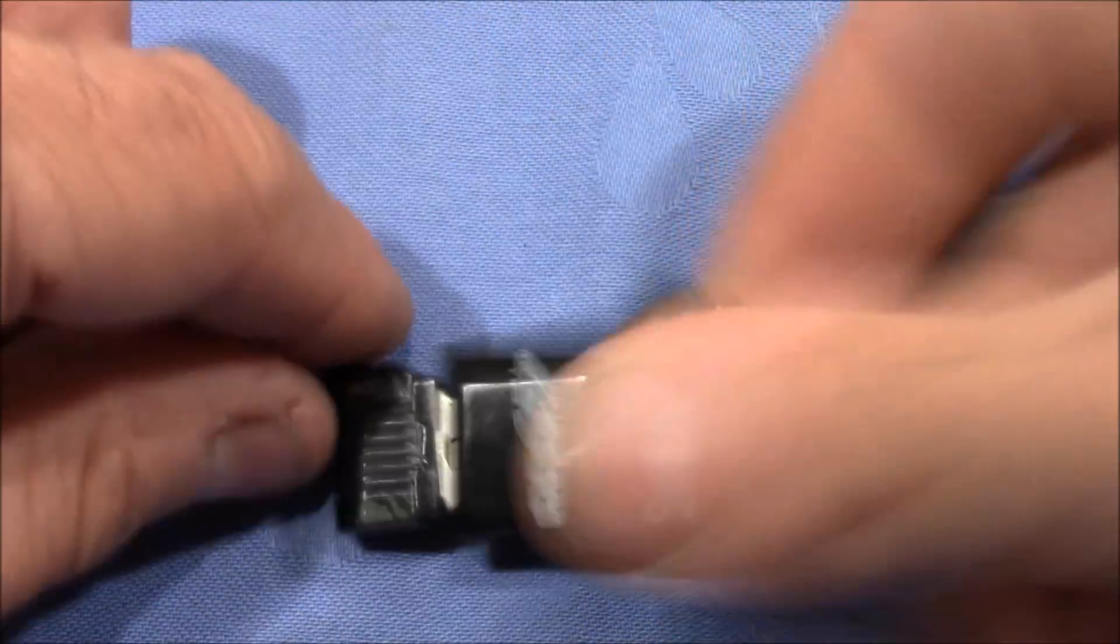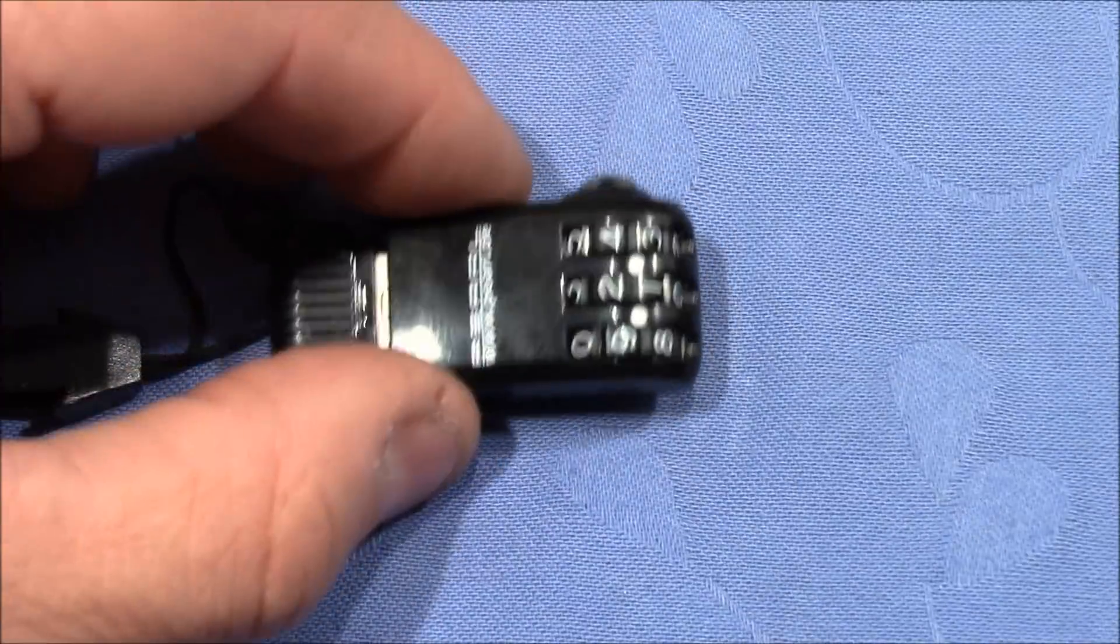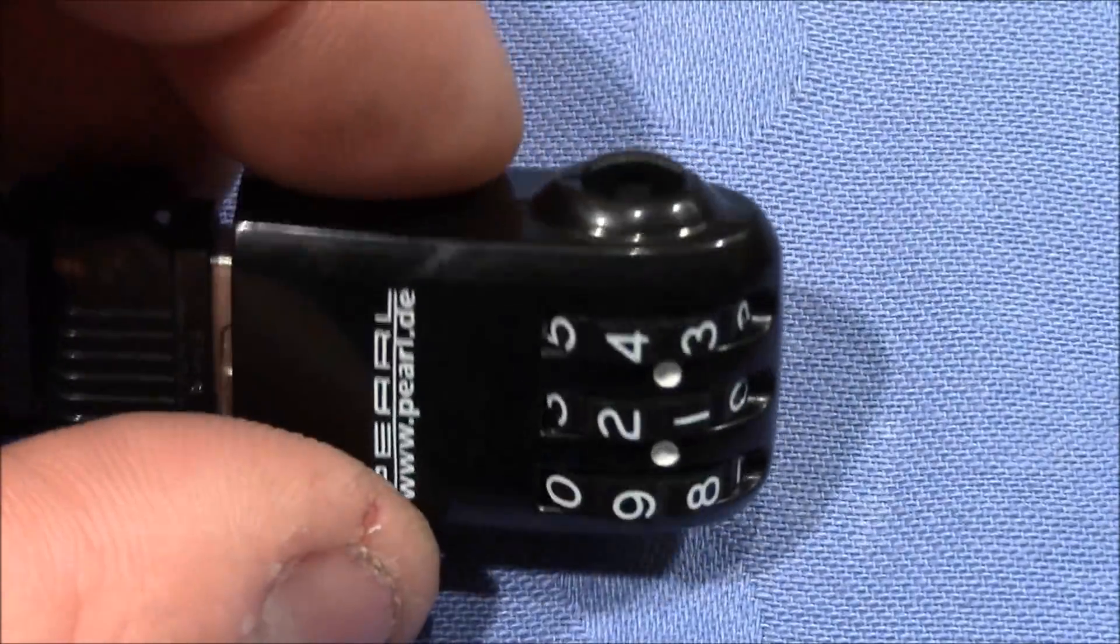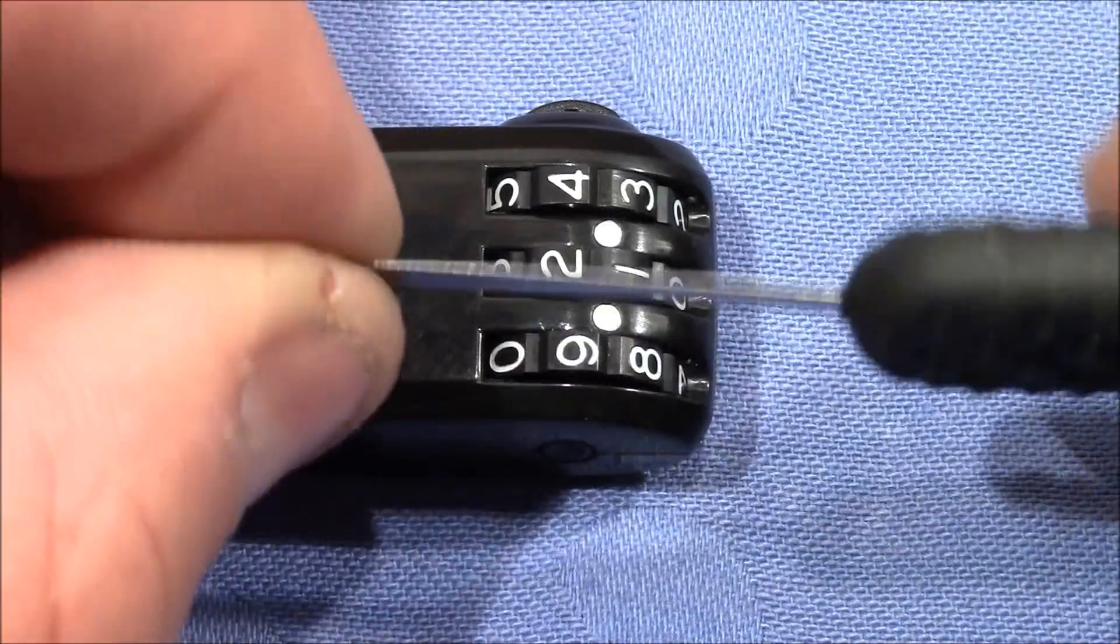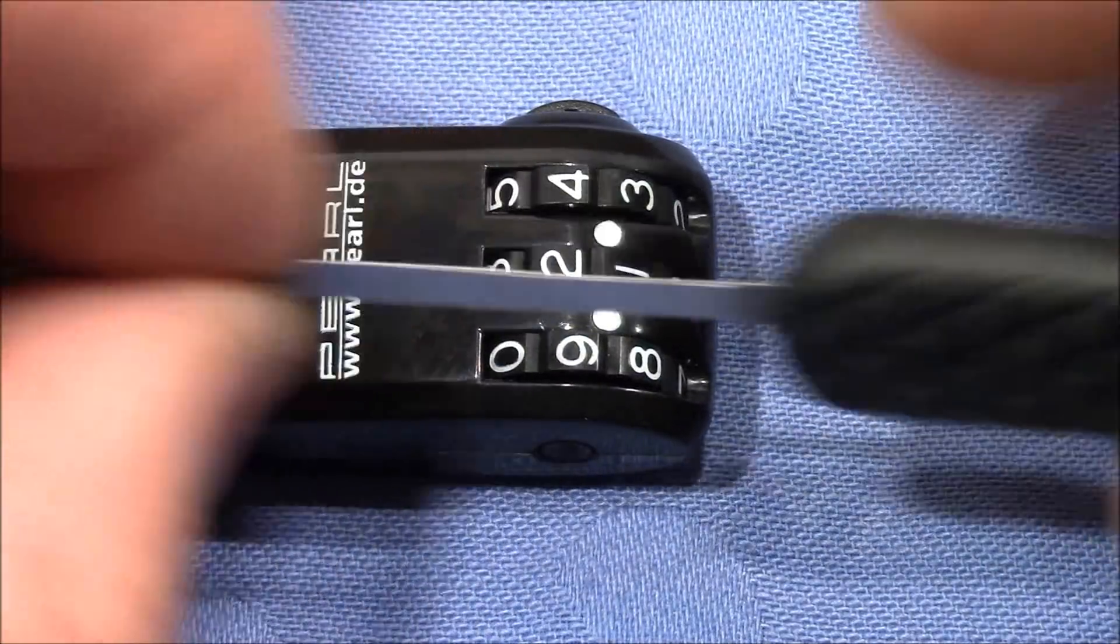Then I put in my USB stick all the way, then I shuffle the wheels and I don't know the code. So what I want to do now is try to find the gates of the inner wheels with this little decoding tool—a very thin piece of metal with a handle.